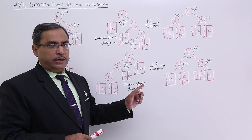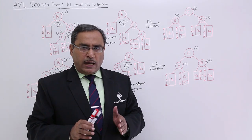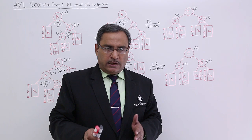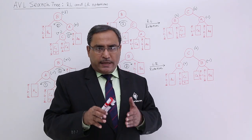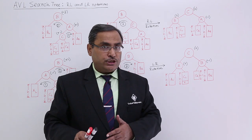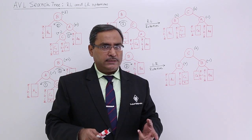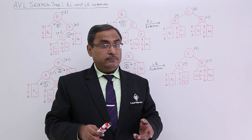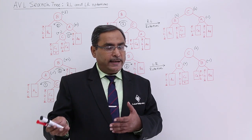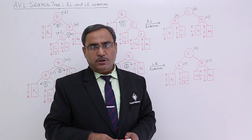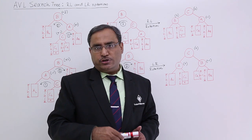In this way after doing rotation the tree has become height balanced. In the previous video I discussed single rotation of 2 types, and here I have discussed double rotation of 2 types. Now let us solve one problem on AVL tree — these sorts of problems are very frequent in competitive exams, GATE exams, and semester exams. Please watch the next video which will be a continuation of this one.